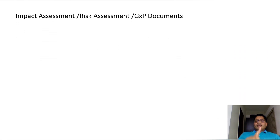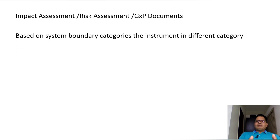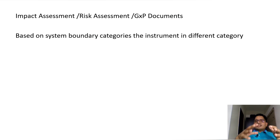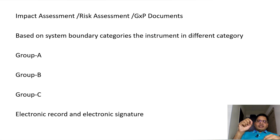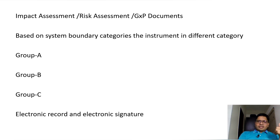To start instrument qualification, the first step is to perform an impact assessment, also called a risk assessment — a GMP document based on the system boundary. The system boundary covers the capabilities of the instrument: whether it is attached with software, whether it has measurement capability, and so on. Based on the GMP document, you first identify whether the instrument is Group A, Group B, or Group C. Then you check if there is software or internal memory, and whether the instrument has electronic record and electronic signature capability.